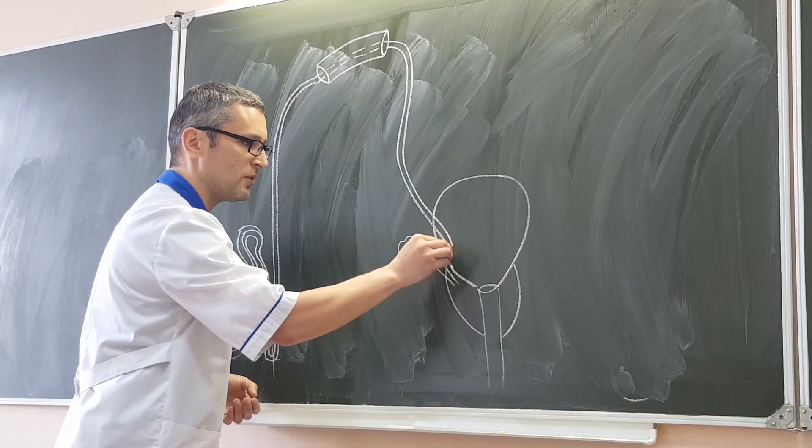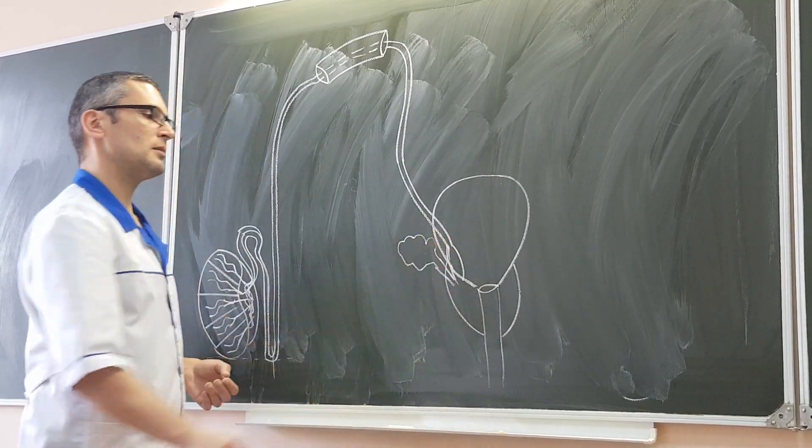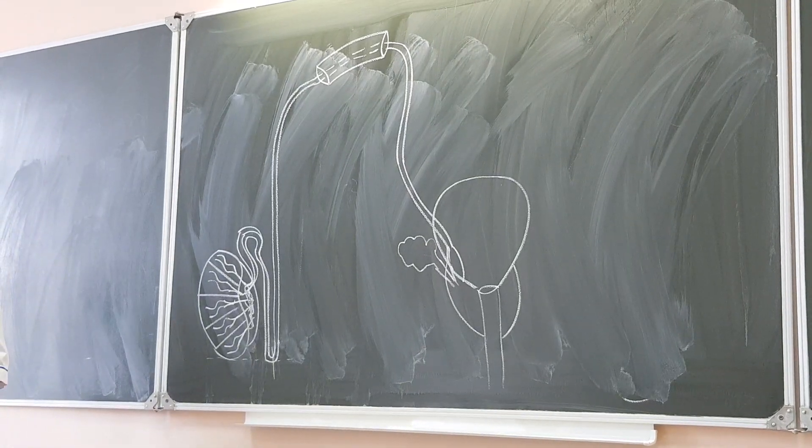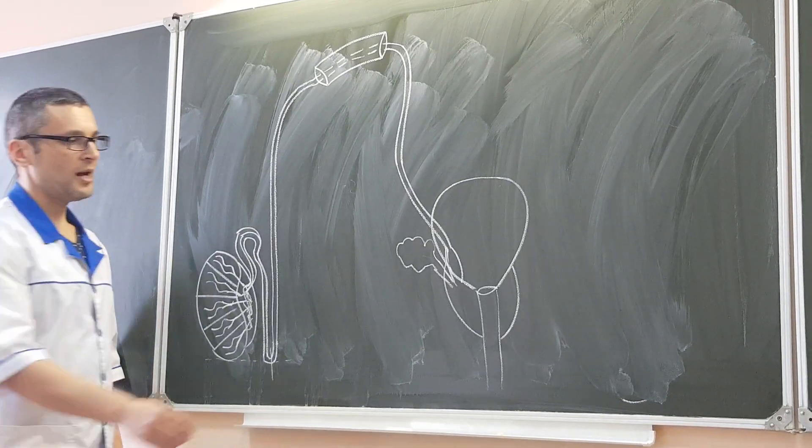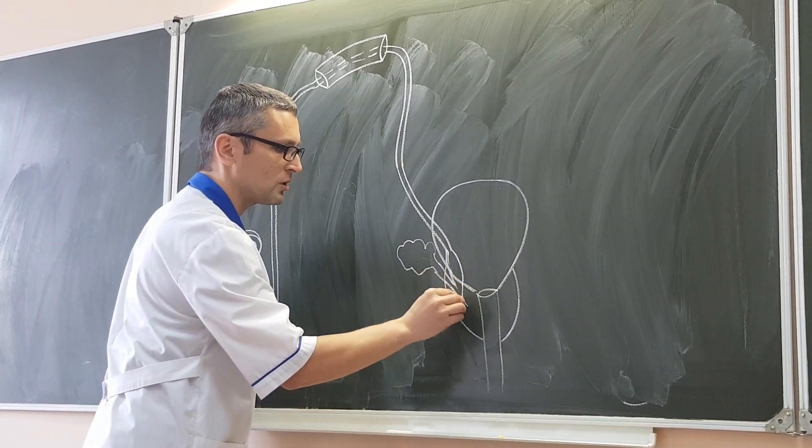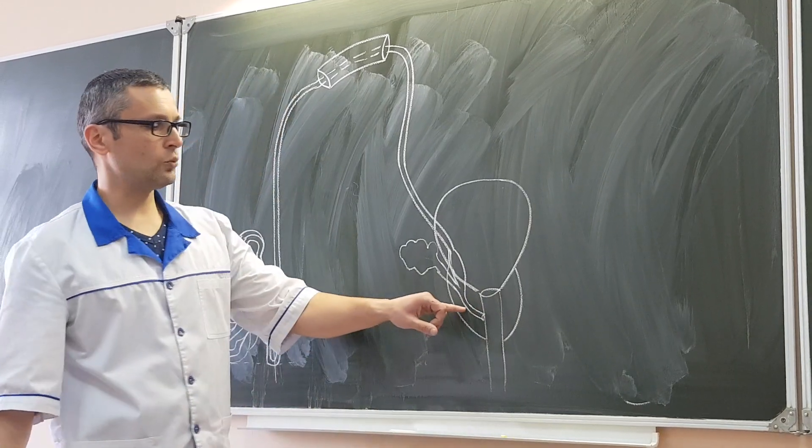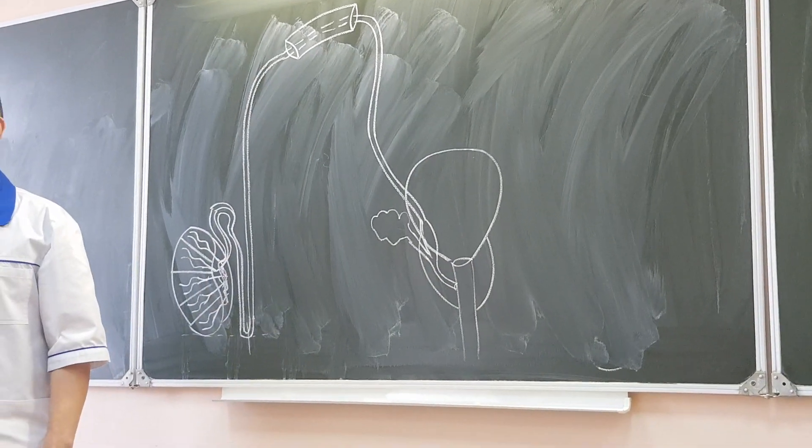And this ductus excretorius unites with ductus deferens. But before this, ductus deferens forms dilatation, like that. And this dilatation is called ampulla ductus deferens. And afterward, this ampulla unites with ductus excretorius, and very short duct is formed, which is situated inside of the prostate gland.